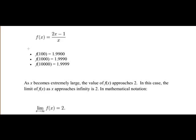We can see it clearly here also. As the x value increases — from 100 to 1000 to 10,000 — the corresponding y value gets closer and closer to 2. So as x becomes extremely large, the value of f(x), which is the same thing as y, approaches 2.